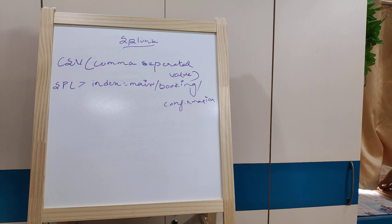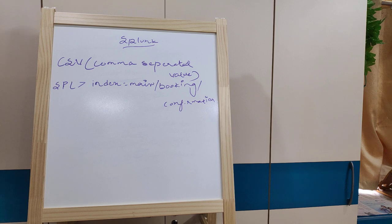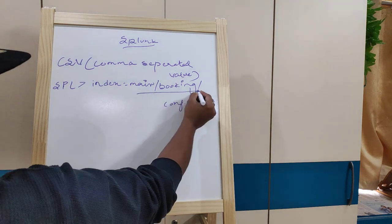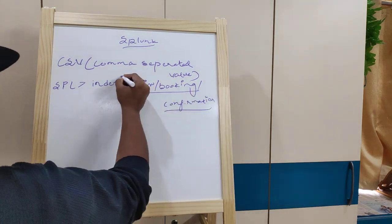The preceding filter searches results using index=main. You can further refine with a path like index=main, then a slash booking slash confirmation, to filter events related to booking confirmation in the raw data. Additional filters can be chained using logical operators.